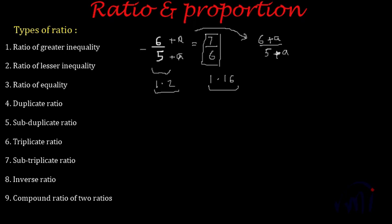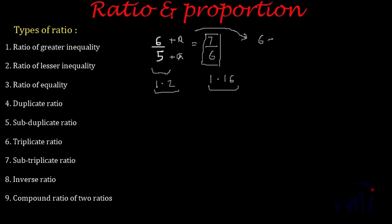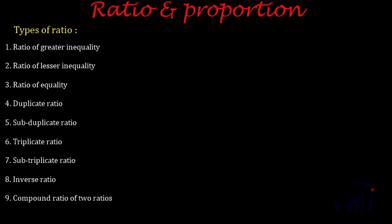What happens if I subtract a constant, say 1, from both numerator and denominator? Subtracting 1 from 6 gives 5, and subtracting 1 from 5 gives 4, so the ratio becomes 5 by 4, which equals 1.25. So if you subtract a constant from a ratio of greater inequality, the resultant ratio will be more than the original ratio.